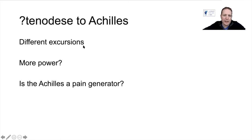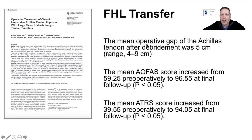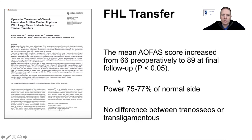For FHL transfer, the mean operative gap in one paper was five centimetres, and this was done with FHL transfer alone without repairing the tendon itself. The mean HRS score increased from 39 pre-operatively to 94 at final follow-up. Unfortunately, you do lose power, so for an older age group this is very successful, but for those expected to return to sporting activity this would not be suitable.